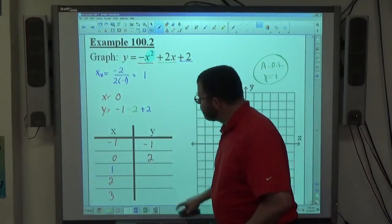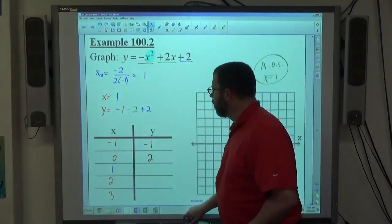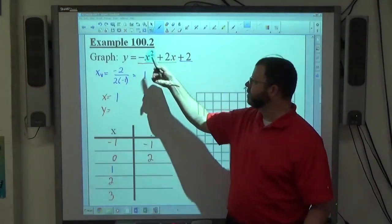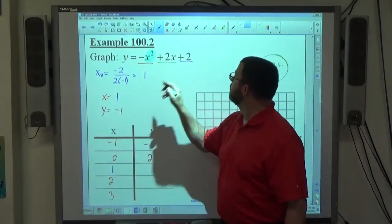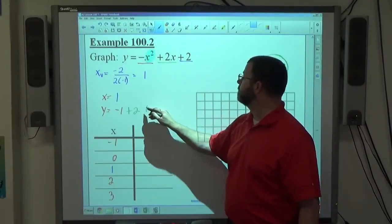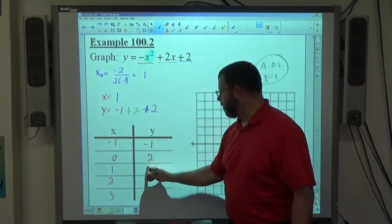x equals 1. So again, I'm evaluating. What's 1 squared? And then make it negative. So negative 1. Plus 2 times 1? Plus 2. And then plus 2, right? 2 plus 2 minus 1 makes 3.